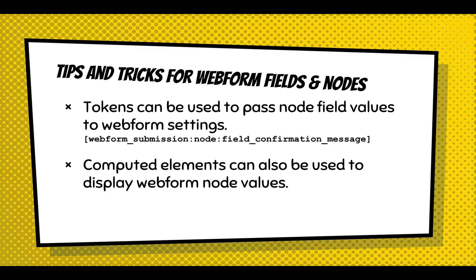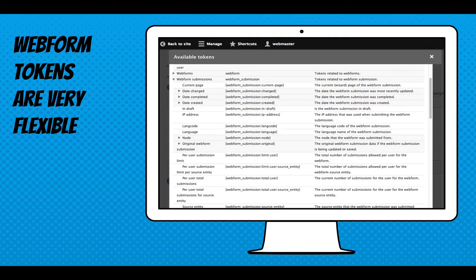Some tips and tricks for webform fields and nodes: tokens are really important when you're starting to deal with relationships. The idea is that you have a submission coming in from a node and you can grab field data off that node. For example, in each one of your webform nodes you can have a different confirmation message — add a field called field confirmation message and pass this information into it. Going back to the event registration, if you need to pull dates off the event, you can use tokens to pass those dates into your webform. You can also use computed elements, which are usually driven by tokens, to display the webform node field values. Webform tokens are very flexible.